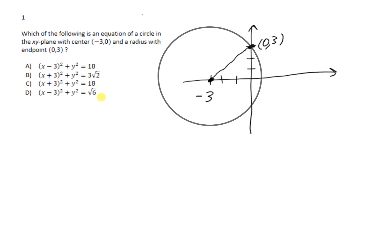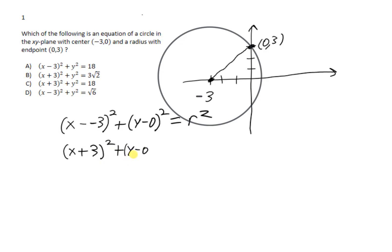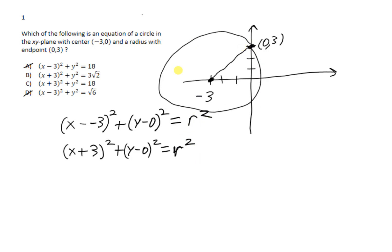I need to come up with an equation for this circle. Just off the bat, I know the center is at (negative 3, 0), so by the formula it'd be (x minus negative 3) squared plus (y minus 0) squared equals r squared — which simplifies to (x plus 3) squared plus y squared equals r squared. Looking at the answer choices, I can eliminate some options. The issue is I don't yet know the length of the radius, so I need to figure out r squared.